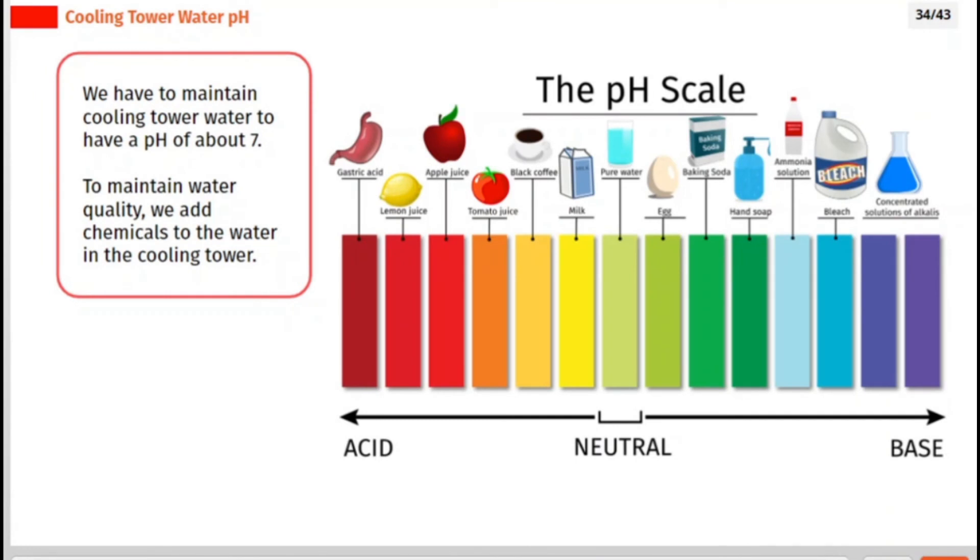We have to maintain cooling tower water to have a pH of about 7. To maintain water quality, we add chemicals to the water in the cooling tower.